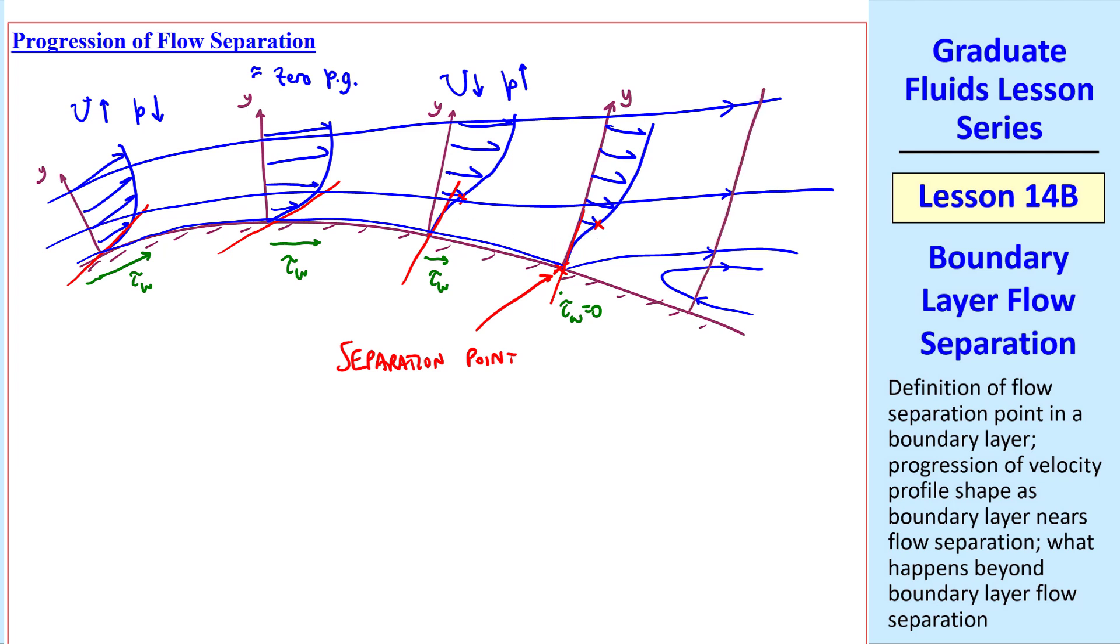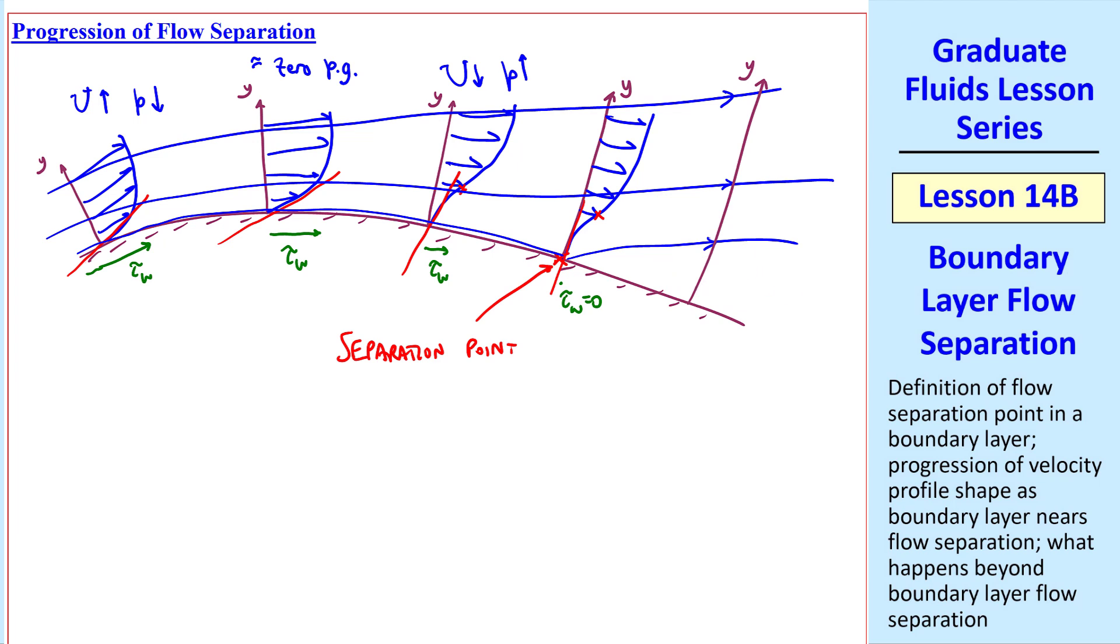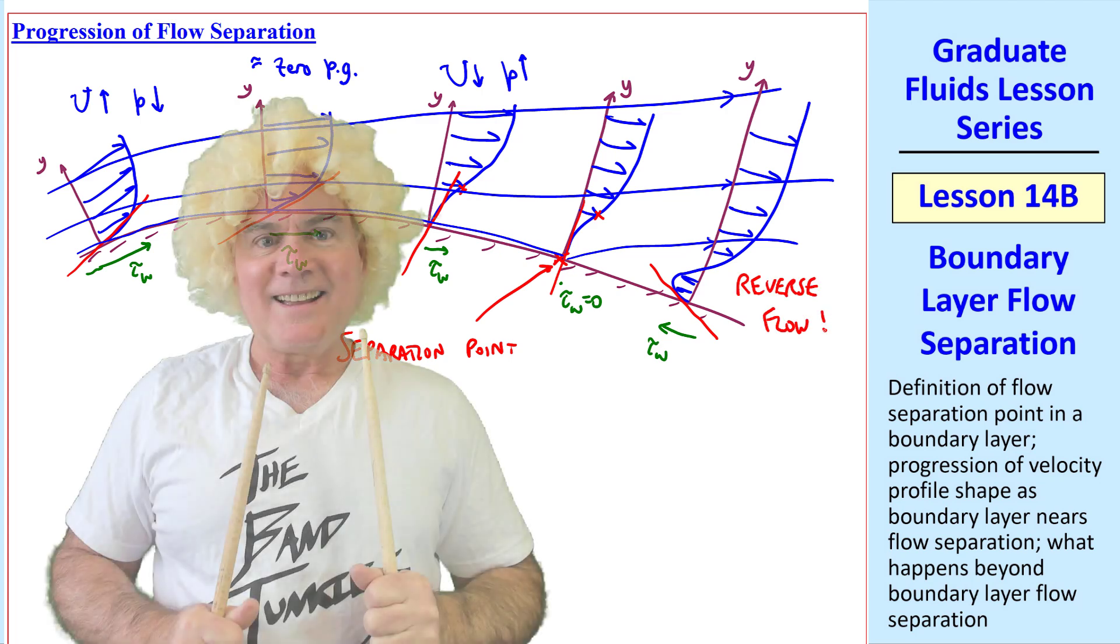We can sketch the velocity profile in this region. I'll remove this streamline, so we don't complicate our figure. But the profile will have a backflow region, where the flow actually goes backwards. And since the slope is now in the opposite direction, tau w is actually negative as well. So we see a region of reverse flow.